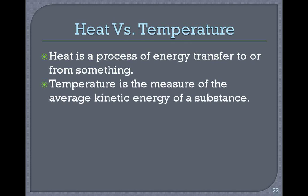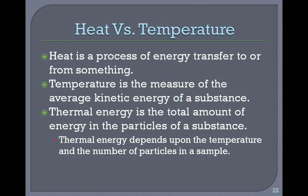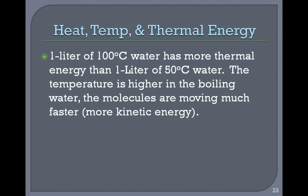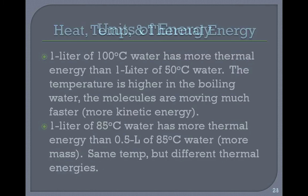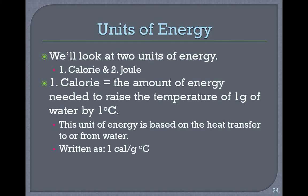Heat versus temperature. Heat is a process of energy transfer to or from something. Temperature is the measure of the average kinetic energy of a substance. Thermal energy is the total amount of energy in the particles of a substance and depends upon both the temperature and the number of particles in a sample. For example, one liter of 100°C water has more thermal energy than one liter of 50°C water because the molecules are moving faster and have more kinetic energy. One liter of 85°C water has more thermal energy than half a liter of 85°C water because there's more mass — same temperature but different thermal energies.